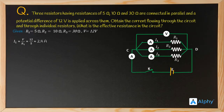I1 equals V by R1, that is 12 by 5, which gives 2.4 ampere. I2 equals V by R2, that is 12 by 10, which gives 1.2 ampere. I3 equals V by R3, that is 12 by 30, which gives 0.4 ampere.